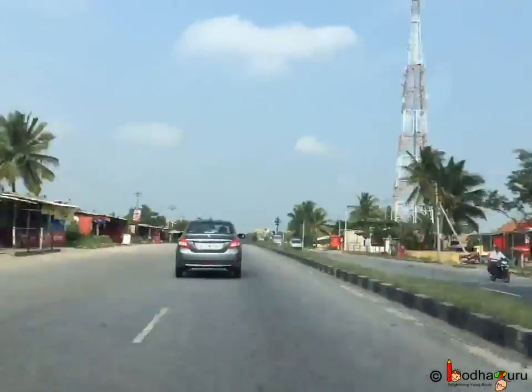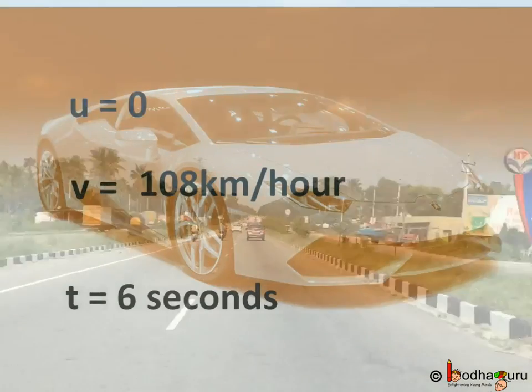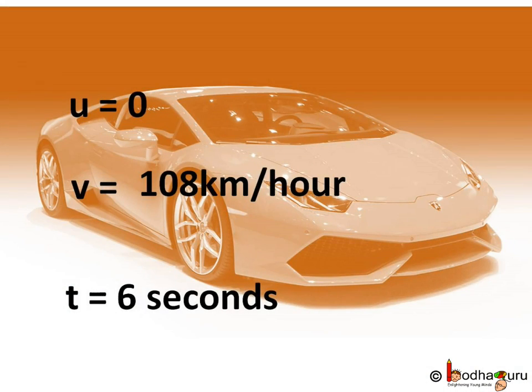Which formula to use? Assuming it is a uniform acceleration, the car starts from rest. This means initial velocity u is equal to 0. We have final velocity v is equal to 108 km per hour and it takes only 6 seconds to reach that speed. So t is equal to 6 seconds.